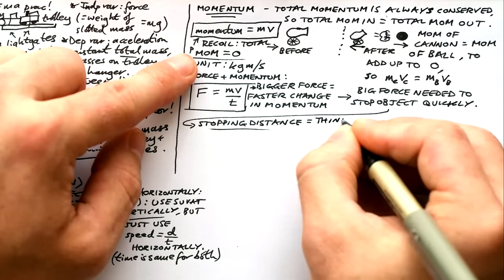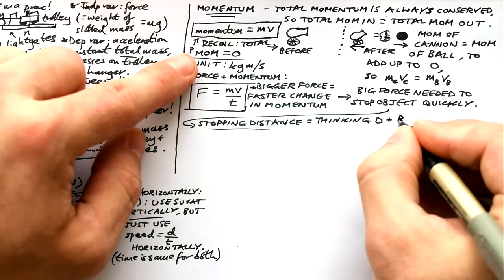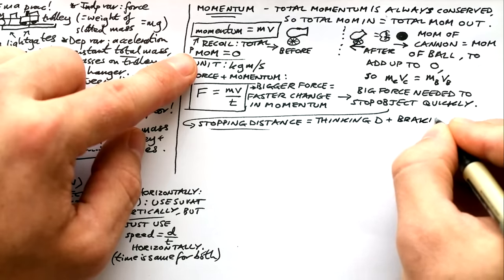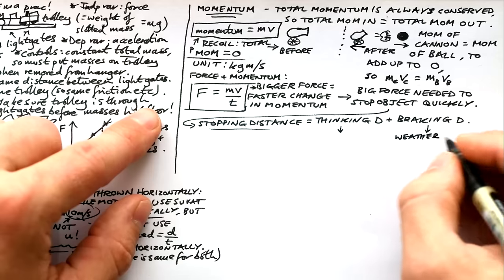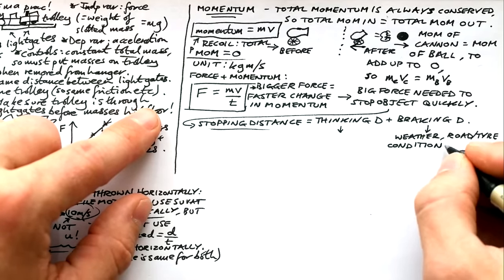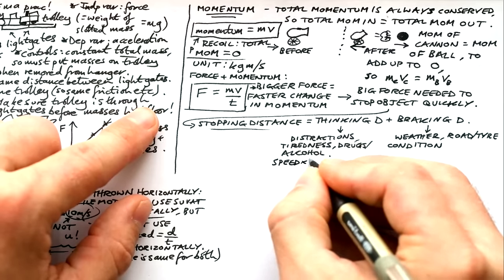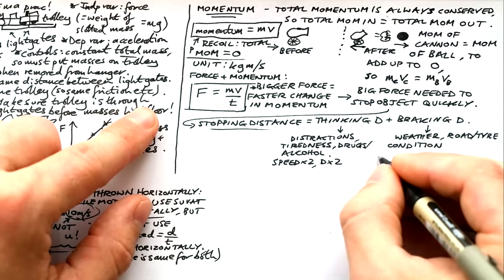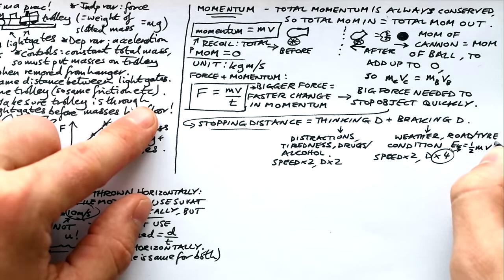Stopping distance is equal to thinking distance plus braking distance. When you want to stop your car, you have to lose all of your momentum. That's thanks to the friction in the brake pads and between the wheels on the road. If you lose your momentum over a long time, you don't feel a big force. But if you slam on the brakes, you'll lose all your momentum in a very short time. Dividing by a very small time gives you a big force. Braking distance depends on weather, road or tire condition. Your thinking distance depends on things like distractions, your tiredness, drugs, alcohol. The biggest factor of course is speed. If your speed is doubled, then your thinking distance is doubled. But your braking distance doesn't double, it quadruples. This is because you have four times as much kinetic energy. Because Ek equals half mv squared.